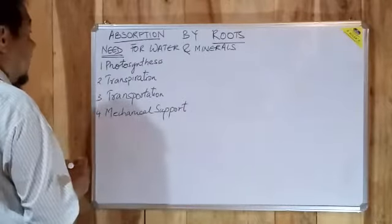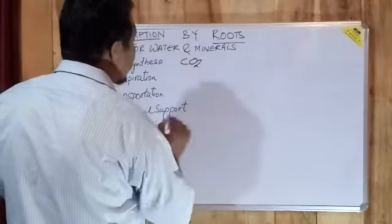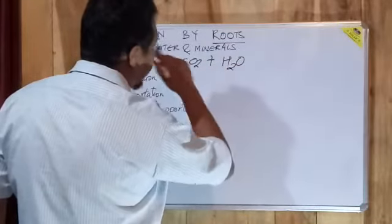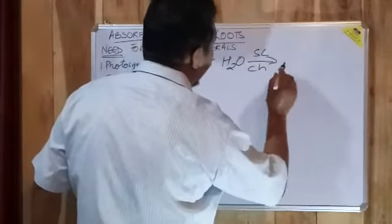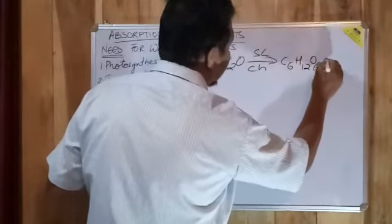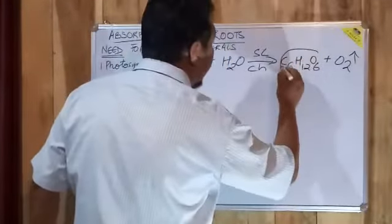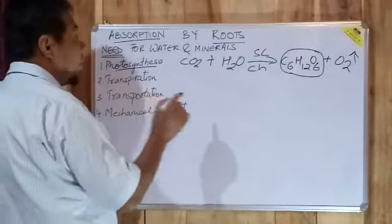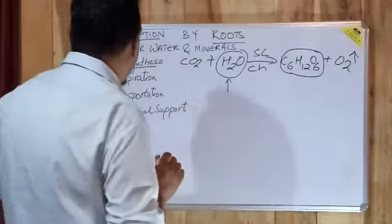A plant absorbs carbon dioxide from the air plus water along with the minerals, dissolved minerals from the soil. And in presence of sunlight with the help of chlorophyll, they manufacture a product called C6H12O6 plus O2. This product is manufactured through the process of photosynthesis, and water along with the minerals is absorbed from the roots.